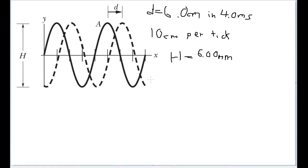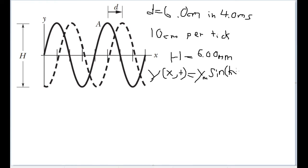The wave conforms to the usual wave formula, where y is written with respect to x distance and time. The wave equals the amplitude y_m multiplied by the sine function of the angular wave number k times the x position, plus or minus the angular frequency ω multiplied by time. We are asked to find all the constants: y_m, k, ω, and the sign between them.